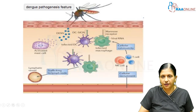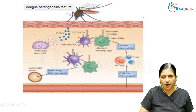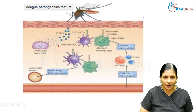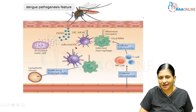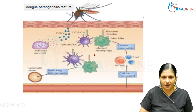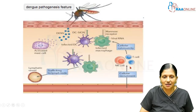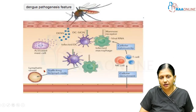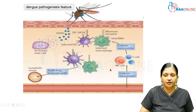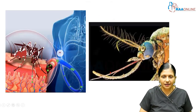Aedes aegypti is endemic in Southeast Asia. Once the Dengue virus is released into the bloodstream, it leads to activation of mast cells and infection of dendritic cells. It enters via the mannose receptor in infected macrophages, causing activation of T cell immunity, trafficking of cytokine mediators toward the lymph node, cellular recruitment, endothelial damage, and leaky capillaries.